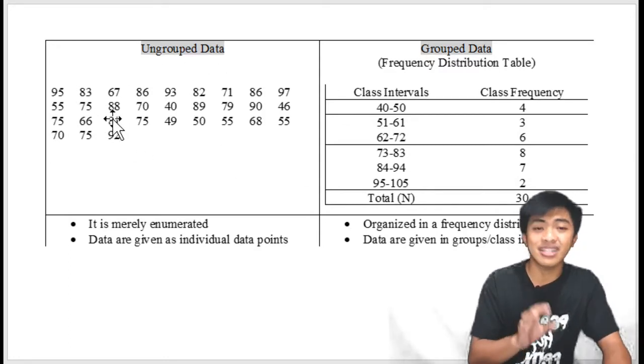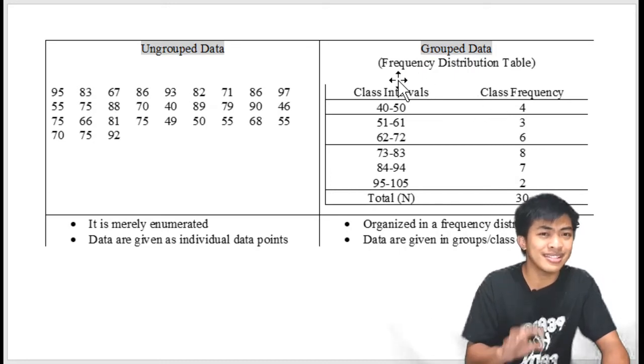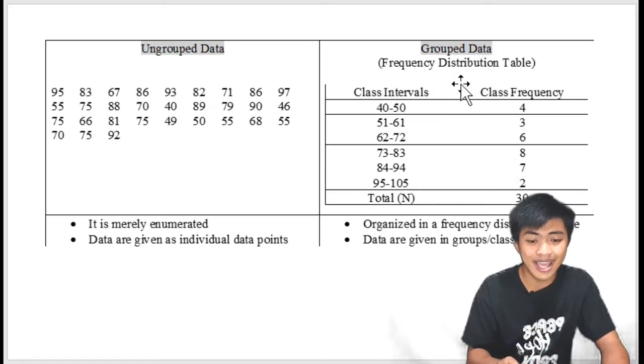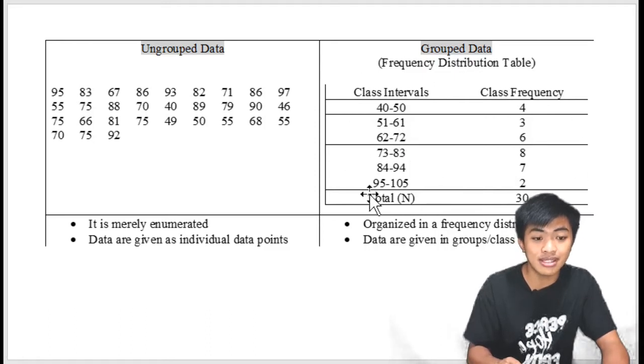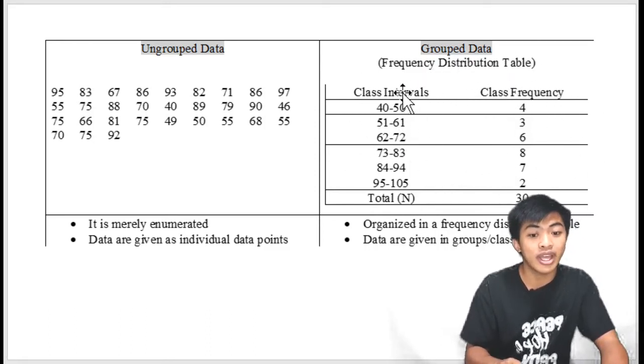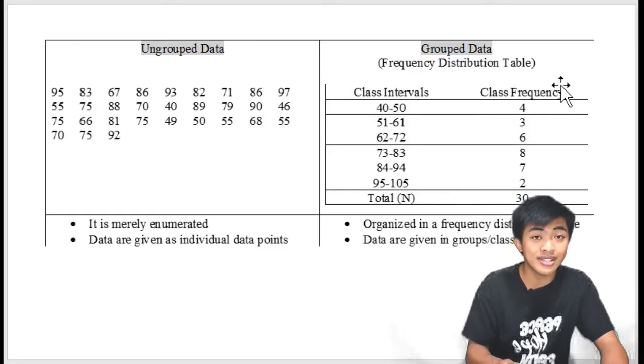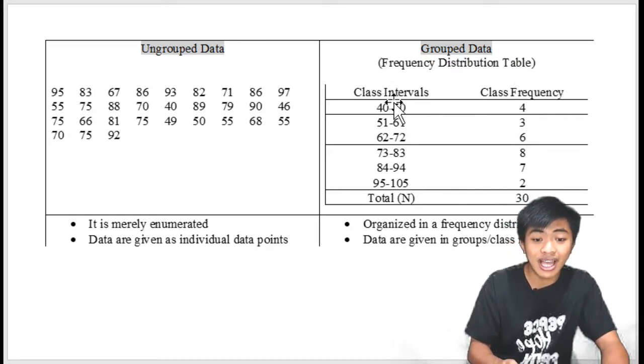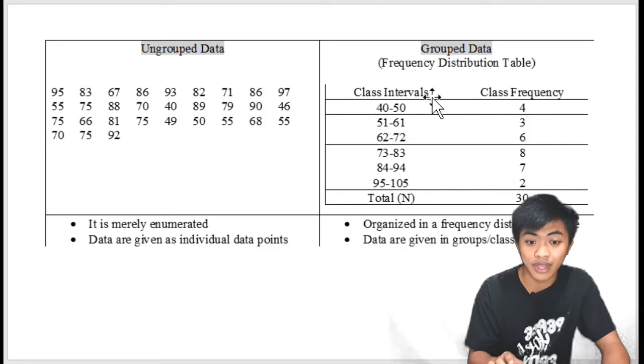The grouped data, on the other hand, is data presented in a frequency distribution table. So, this is what a frequency distribution table looks like. We have class intervals and class frequency. Each class interval, or each group, has their corresponding class frequency.